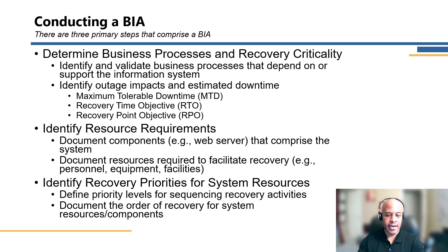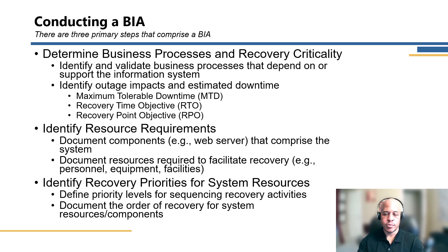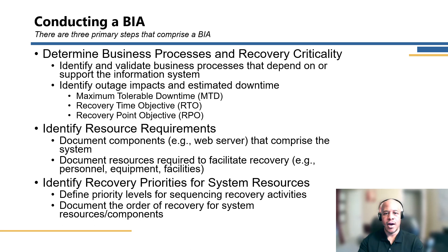And then finally, identify recovery priorities for the system itself. This is typically broken down to the component level — for example, do you need to recover the database prior to bringing up the web server? Priorities are assigned to specific components during recovery so that the sequence of operations allows the business to get back into operation, whether in a manual mode or a least-functionality mode before reaching full operation.